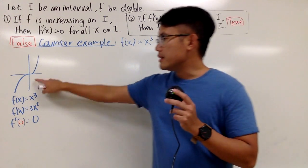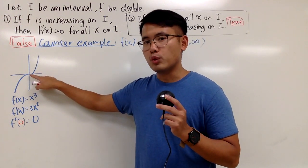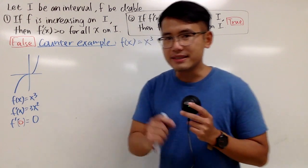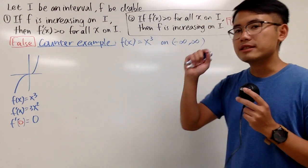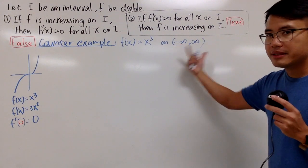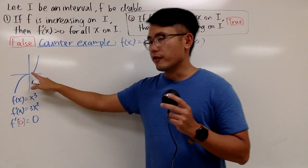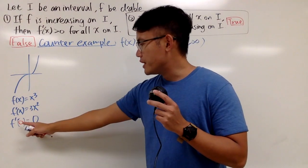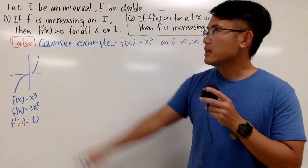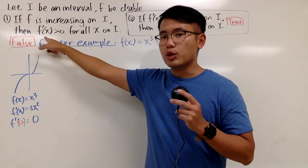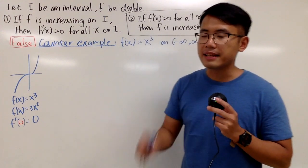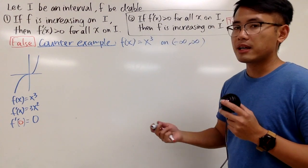The answer to that is yes. The truth is x cubed is always increasing — it's increasing on this entire interval, including at 0. But the derivative is in fact 0 there. So we cannot say that if f is increasing, then the derivative has to be always positive. We cannot say that.